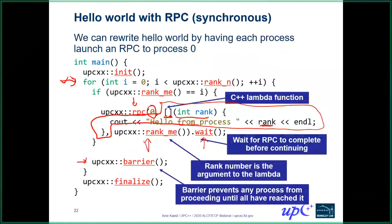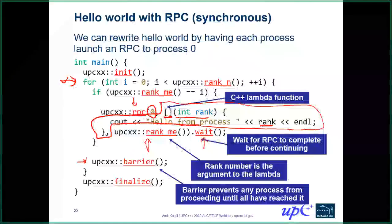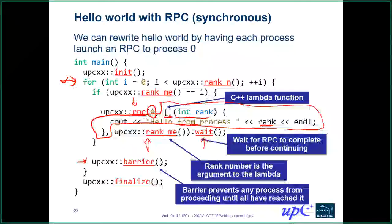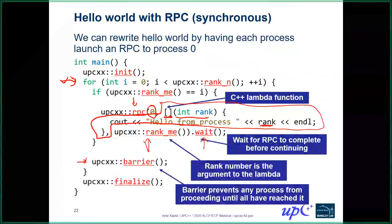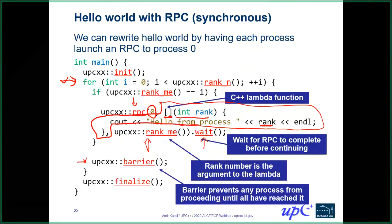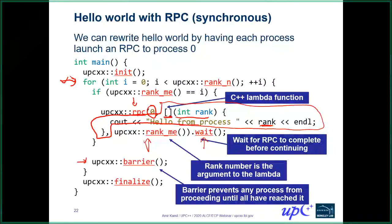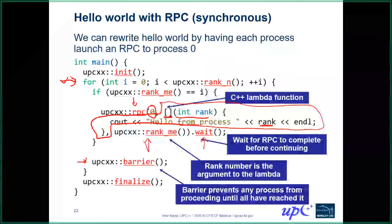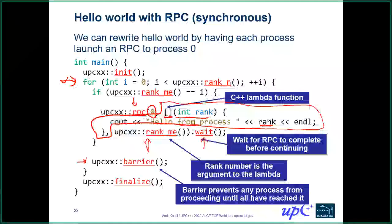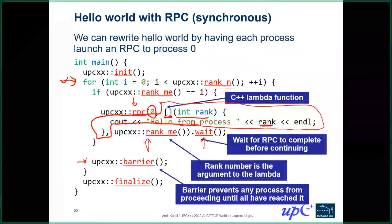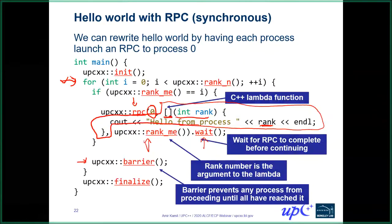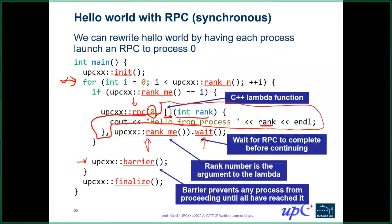On whether removing the wait would have the same effect: you do need a wait somewhere to ensure the RPC completes. One of the restrictions on finalize is that all outstanding operations must be semantically completed. Here we have the wait before the barrier to ensure the next RPC doesn't get initiated before the previous one completes. Synchronization must be done explicitly. In the normal case, we would actually want RPCs to be executed concurrently without the same synchronization.